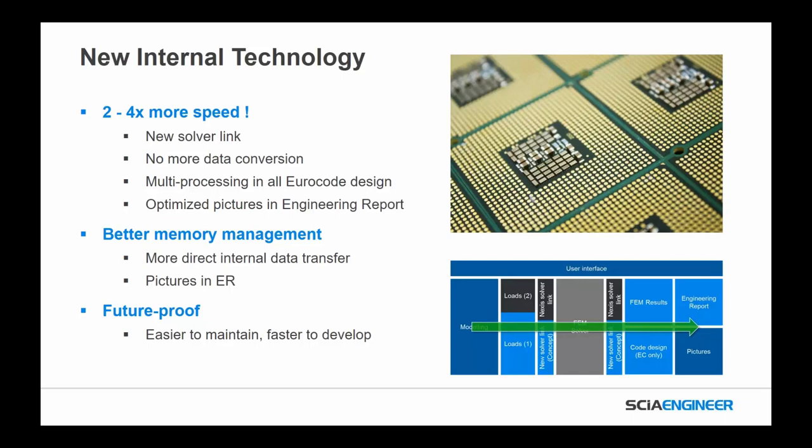We also have better memory management — more direct internal data transfer, so not pulling data from one place and having to channel it. We were able to access all features and functionality of the software. Within the engineering report, better memory management gives better performance for items and pictures. All of this is done so that we can future-proof our software — much easier to maintain and faster to develop.